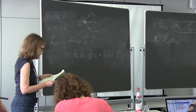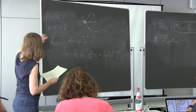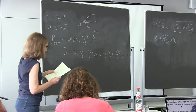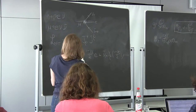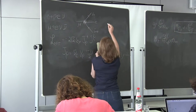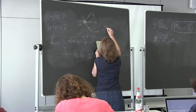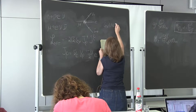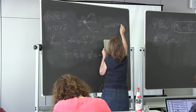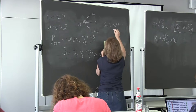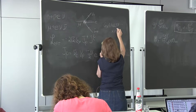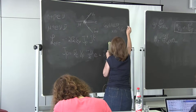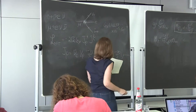G_F is excruciatingly well measured in muon decay: G_F = 1.16637 × 10⁻⁵ GeV⁻².